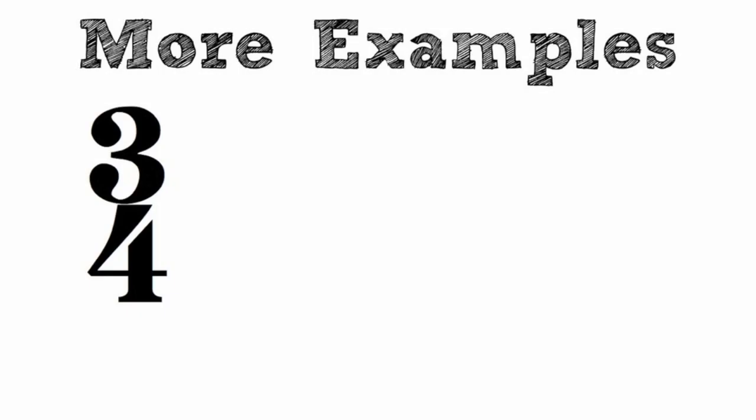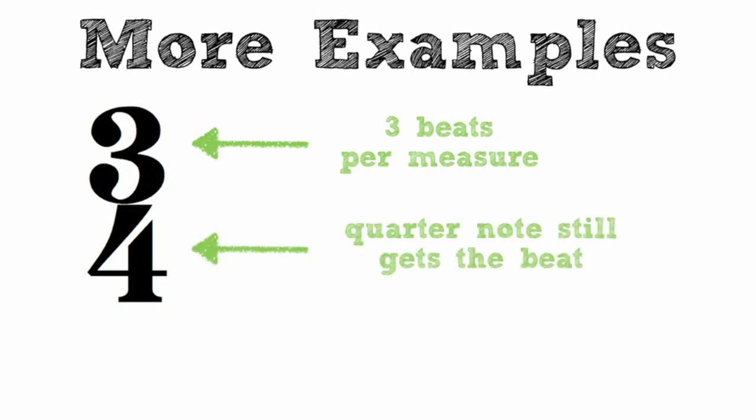This is a 3-4 time signature. The 3 on the top suggests that there are 3 beats per measure. The 4 on the bottom would tell us the quarter note still gets the beat.